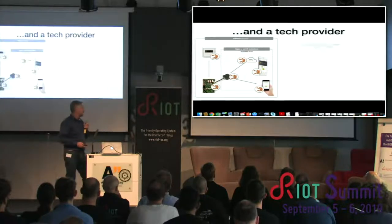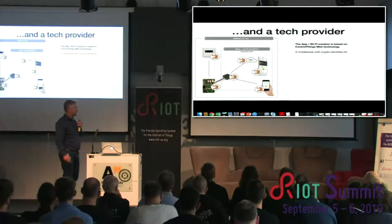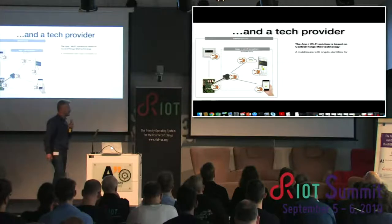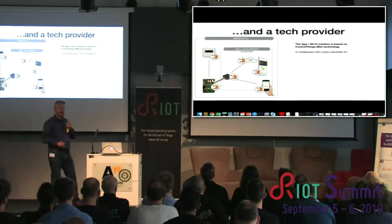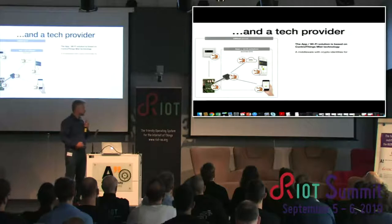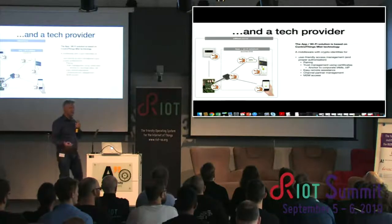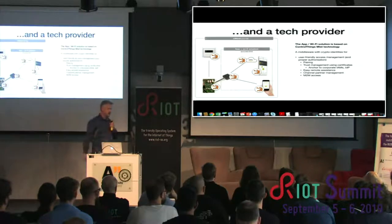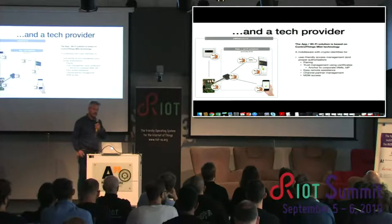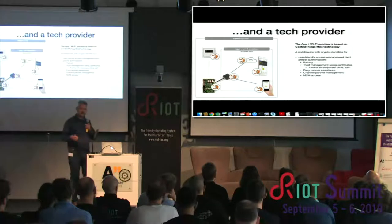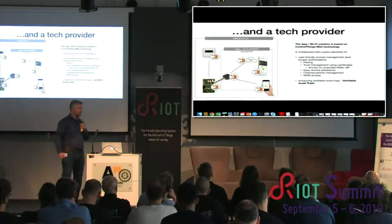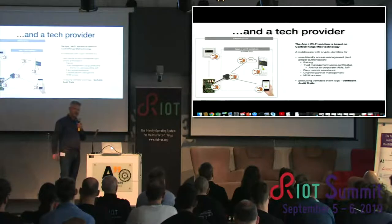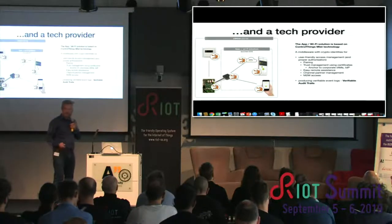I will focus on this last product, where we have embedded our own technology for device pairing — this is one of the two technologies I will talk about. It covers device pairing between a mobile app and an embedded device, in this case a Wi-Fi module connected to the air handling unit using Modbus. It uses crypto identities both in the app and in the Wi-Fi module to establish a secure connection for authenticating and encrypting.